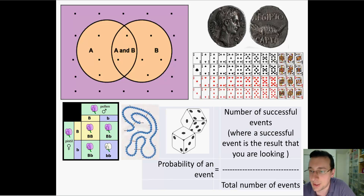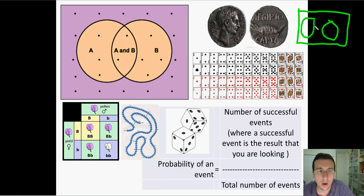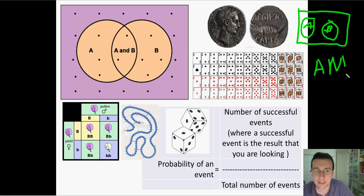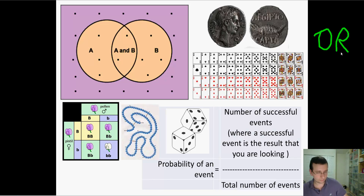Another law I want to show you is the law of addition. The law of addition is for mutually exclusive events — events where A and B cannot happen at the same time, so they are disconnected. The key term for the law of multiplication was AND; the key term for the law of addition is OR. When you see OR in a problem, you use addition.